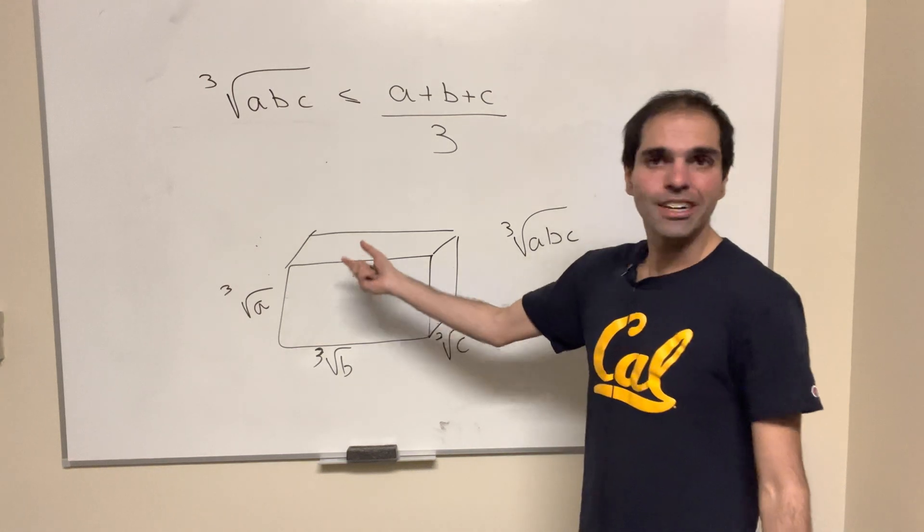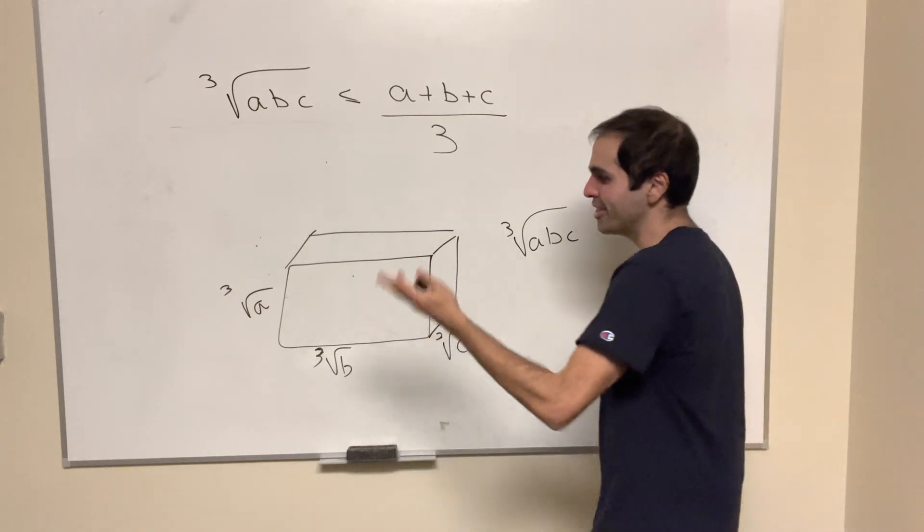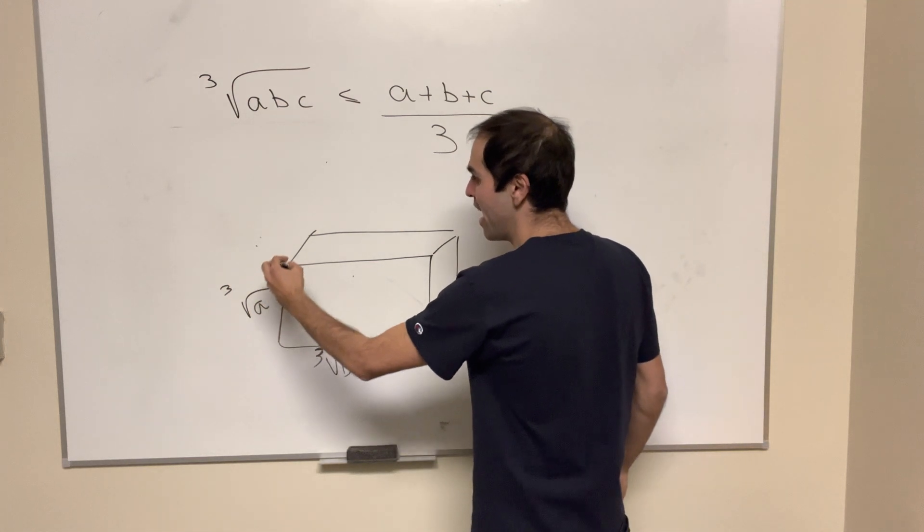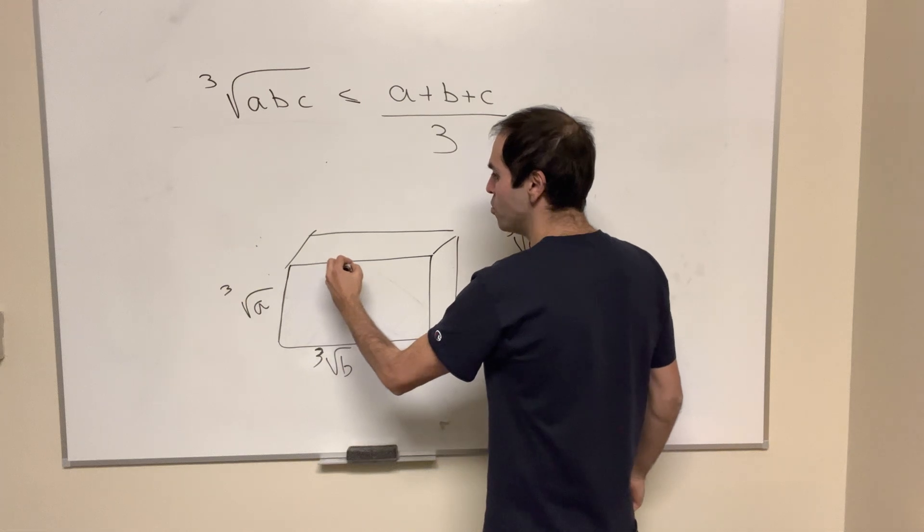But now we have to think a little bit about what this looks like. So my hunch was just let this be cube root of a and then also cut out a cube root of a here.